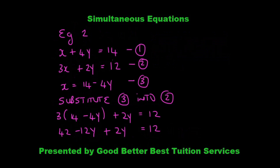Let's do another substitution example. We have x plus 4y is equal to 14, and 3x plus 2y is equal to 12. Remember, we look for an equation where there's a coefficient of 1 — in this case it's the first equation. So we derive our third equation by taking 4y to the right-hand side: x is equal to 14 minus 4y. We then substitute into equation 2, replacing x with 14 minus 4y.